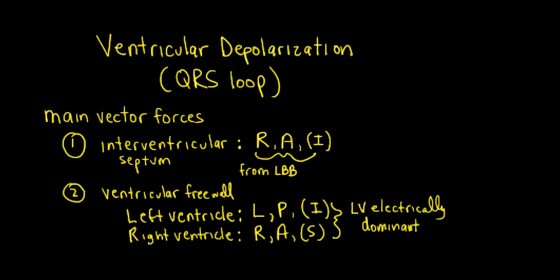So what we need to do next is to put these forces onto the frontal and transverse planes and generate our QRS vector cardiogram loops, and then we can predict what the QRS complexes should look like in some of the key leads. And that concludes this video on vector cardiography and the QRS vector forces.